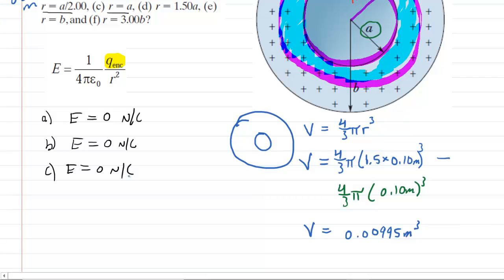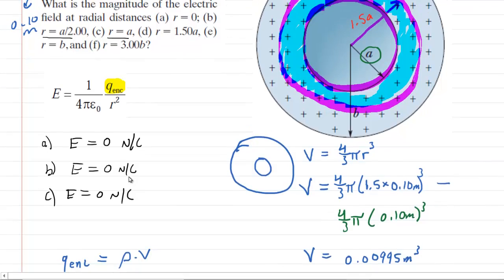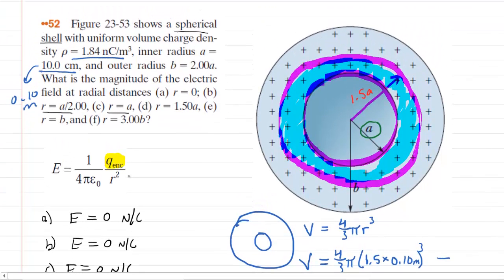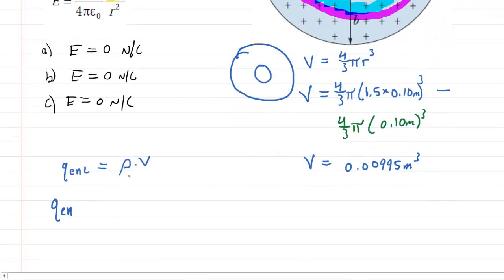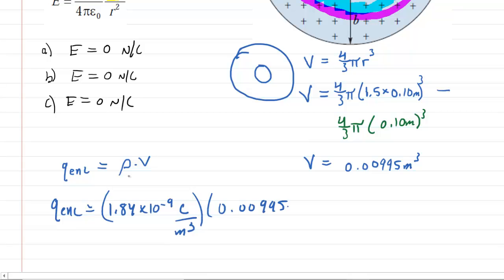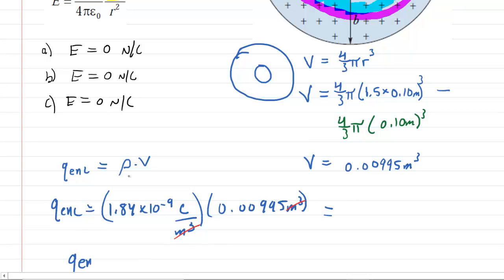Now we have the volume of that bluish donut region. What we really want is the enclosed charge, which equals the volume charge density multiplied by the volume. The question gives us the volume charge density as 1.84 nanocoulombs per meter cubed. So we take 1.84 × 10⁻⁹ coulombs per meter cubed and multiply by the volume we just obtained. The meters cubed cancel, giving an enclosed charge of 1.83 × 10⁻¹¹ coulombs.